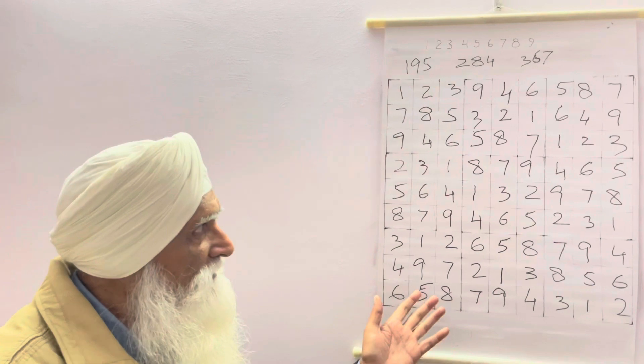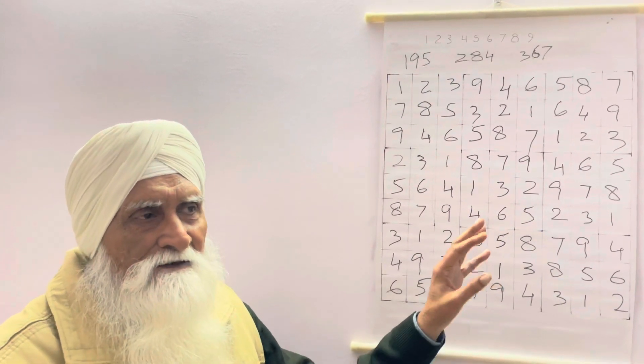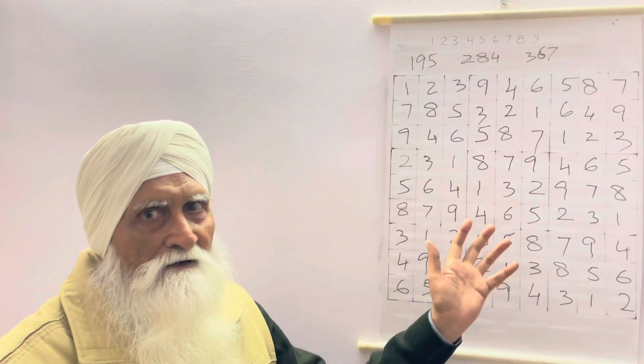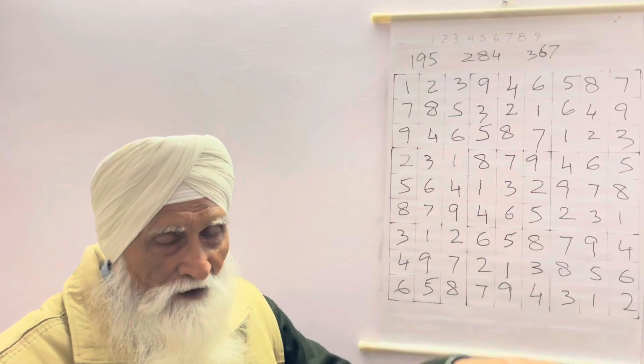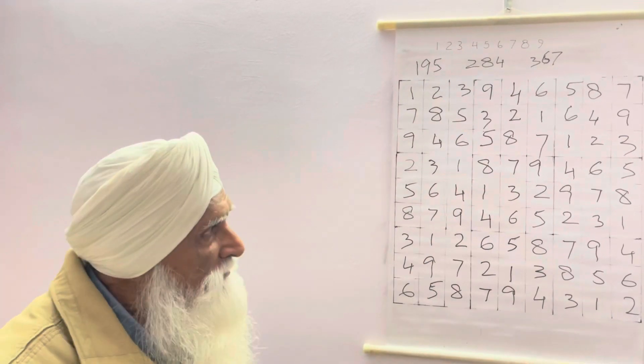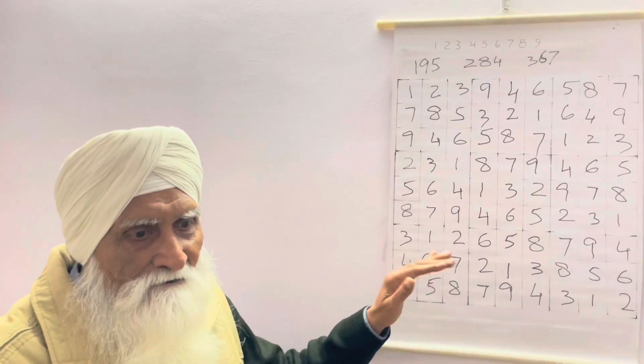So now we have to place 8. 8 will go here. So now we have created the complete grid. In fact, we can say this is a solution for a particular puzzle. We can create a puzzle out of this grid, and then when we solve that puzzle it should get, we should get this solution. Now this is one method of creating a grid. There is another method which I will explain to you now.